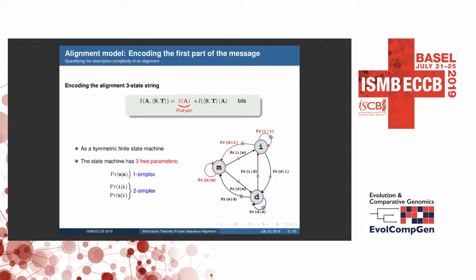So one free parameter is associated with a match state, where this is the probability of M given M. And it can be represented as a point on a unit one simplex. And for I state, there are two other free parameters associated, the probability of I given I and M given I, where we can represent these as a point vector on a unit two simplex. So after encoding, we also have to infer these free parameters, which I will talk later on.